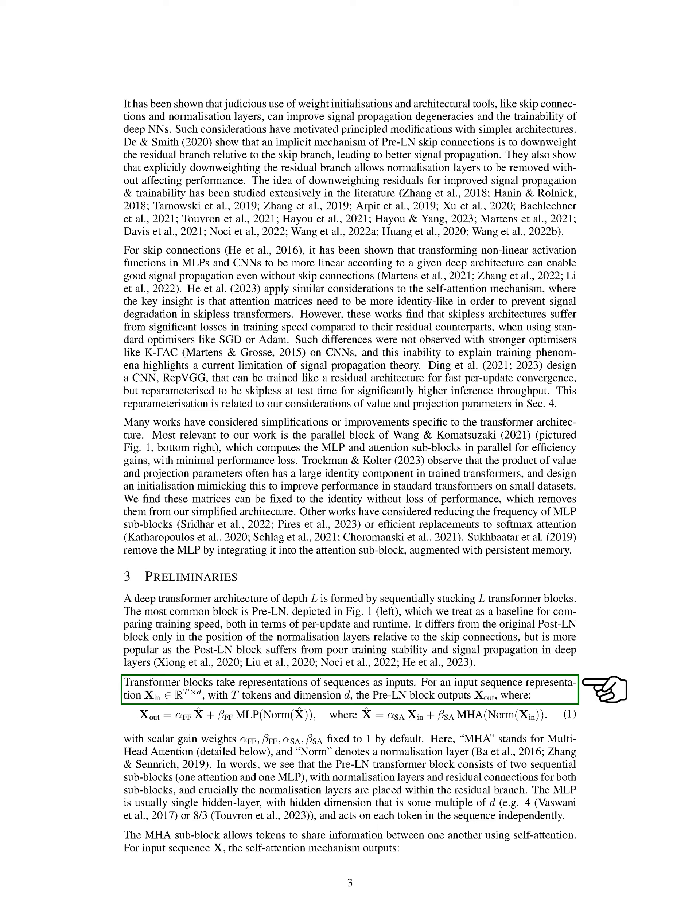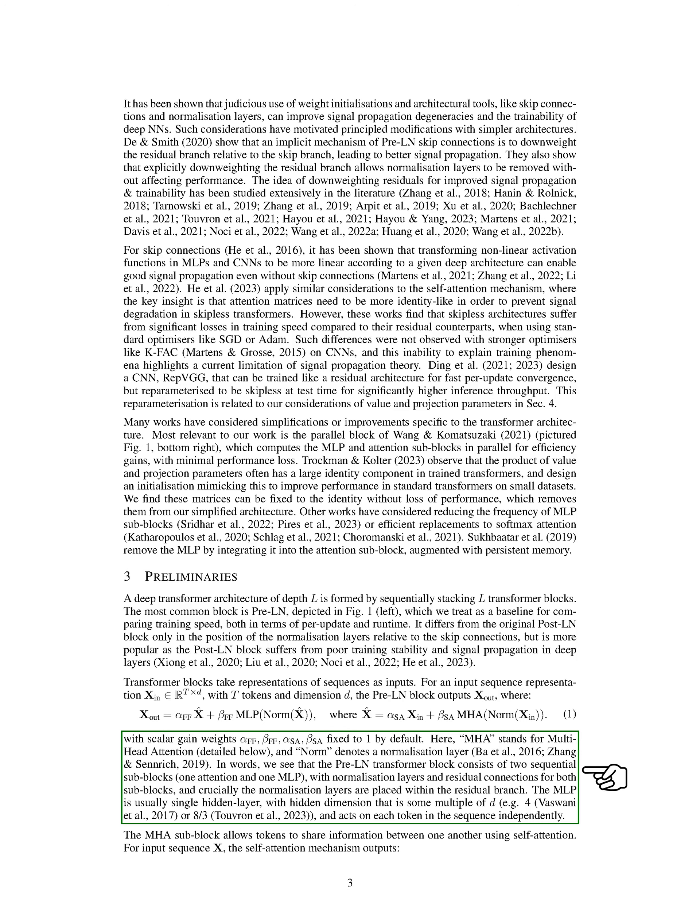These transformer blocks process sequence representations as inputs. Let's say we have an input sequence representation with T tokens and dimension D. The pre-LN block will output a new sequence. This output is calculated by first normalizing the input sequence, then applying a multi-head attention, MHA, operation and a multi-layer perceptron, MLP, operation, both of which are adjusted by certain weights. By default, these weights are set to one.